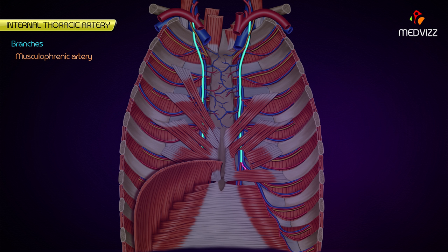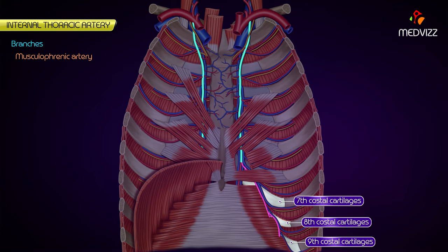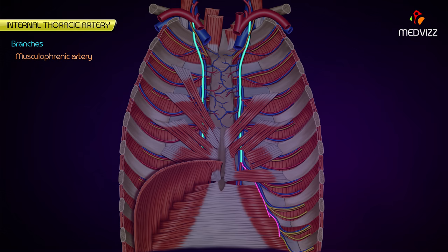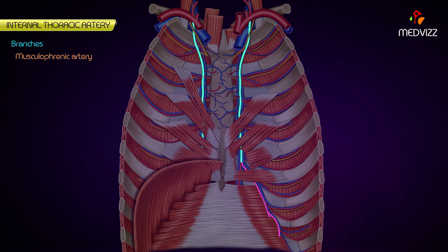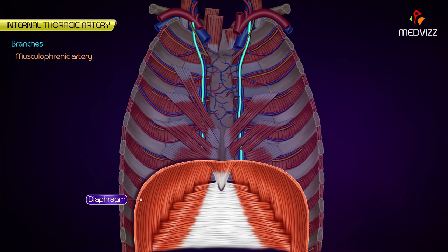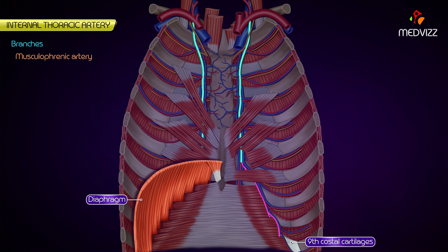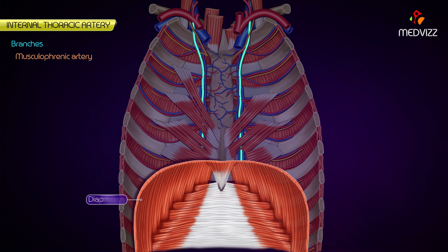The musculophrenic artery runs downwards and laterally behind the seventh, eighth, and ninth costal cartilages, and gives two anterior intercostal arteries to each of those intercostal spaces. It pierces the diaphragm near the ninth costal cartilage to reach its undersurface, supplying the diaphragm and the muscles of the anterior abdominal wall.